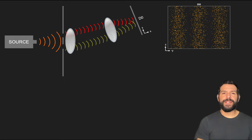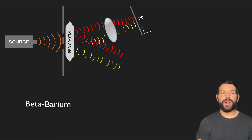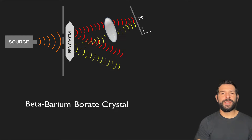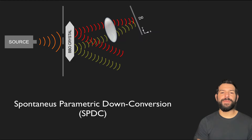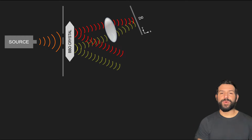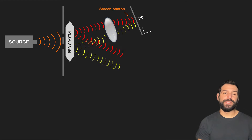The first modification we're going to make is to replace the first lens with a beta-barium borate crystal, or a BBO crystal for short. This crystal takes the incoming source photon waves from the slits and produces an entangled pair of photons through a process known as spontaneous parametric down-conversion. One of the photons is directed towards the screen D0, just like we had before. Therefore we will refer to it as the screen photon.